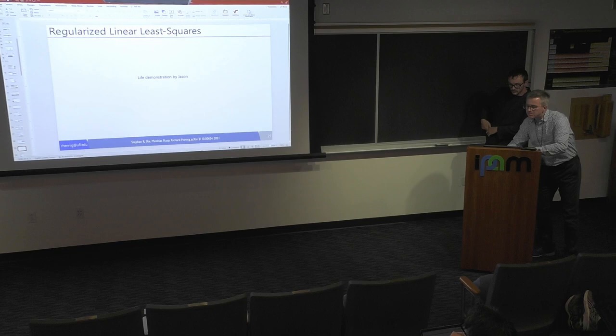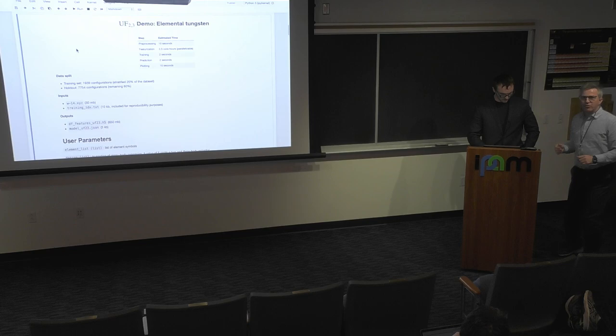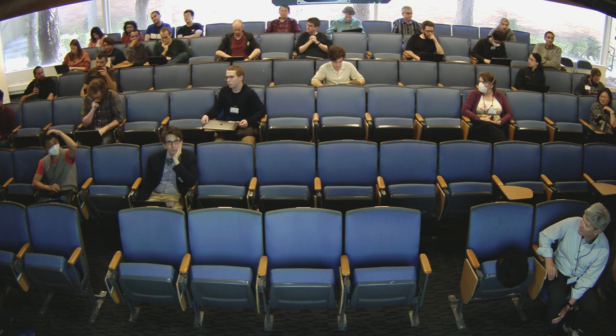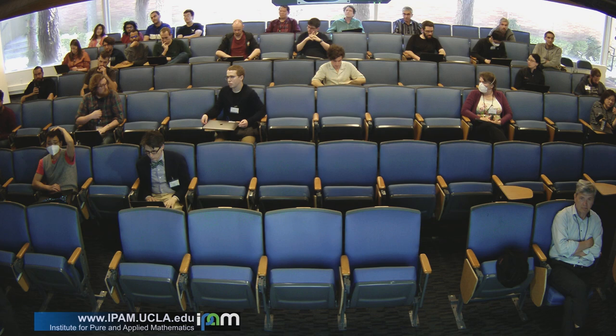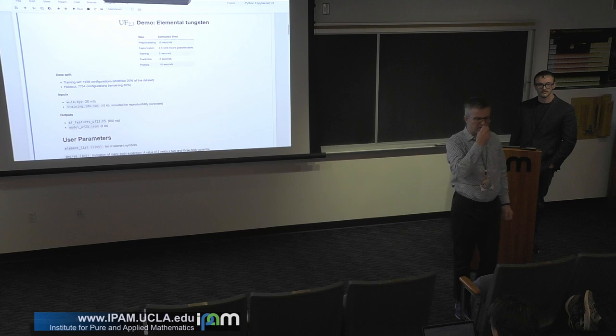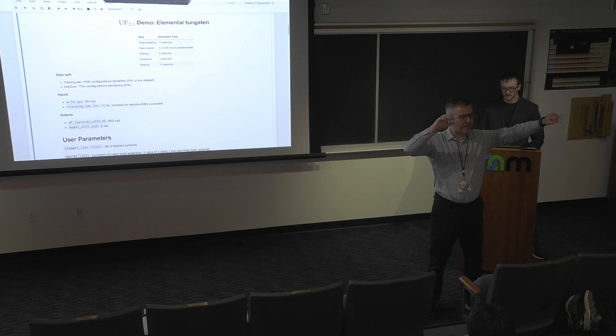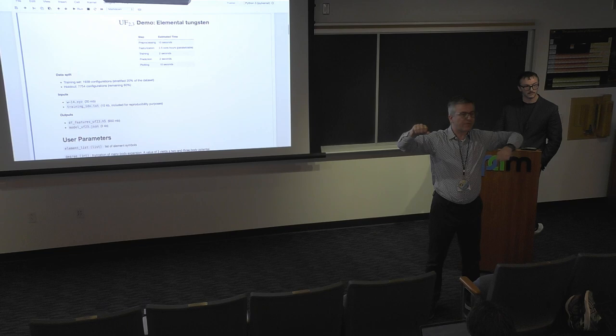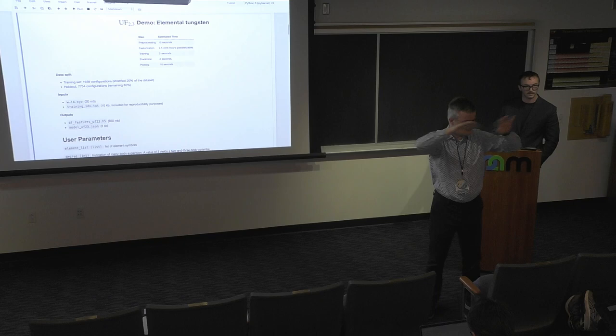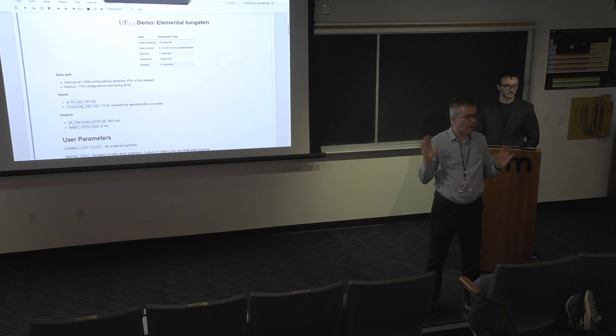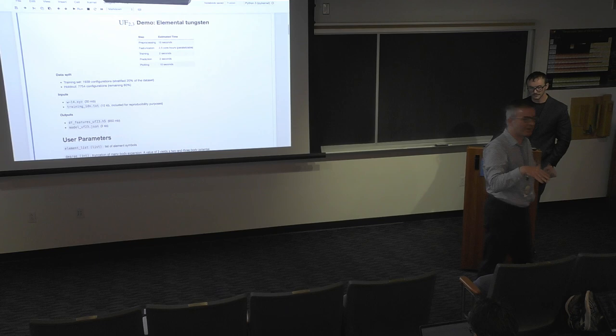A question from the audience: are the B-splines applied to radial coordinates in spherical coordinates? No, we're only working with distances. For the pair term, you have atoms at certain distances. For the three-body term, you have pairs of atoms at certain distances forming a triangle, so you get a term with two distances and an angle between them, expressed as a tensor product of three B-spline coefficients along each of those three directions, going all the way to 180 degrees.